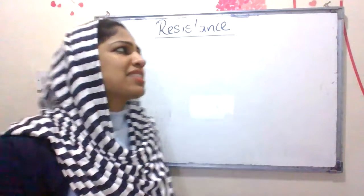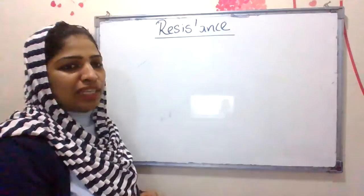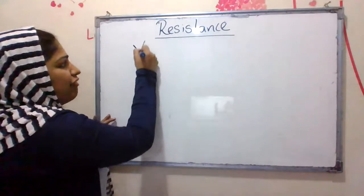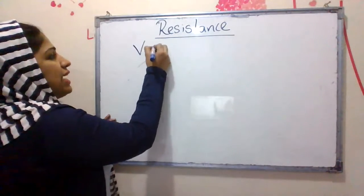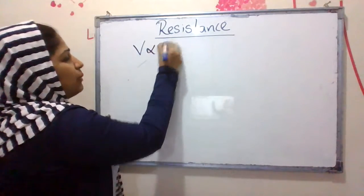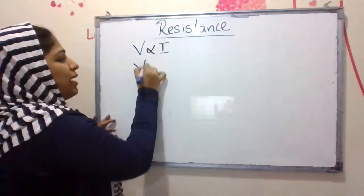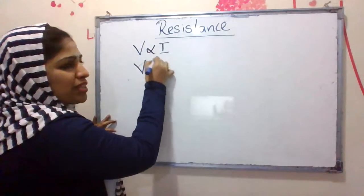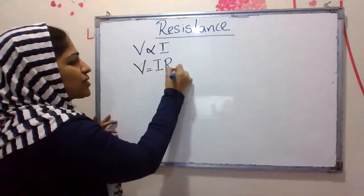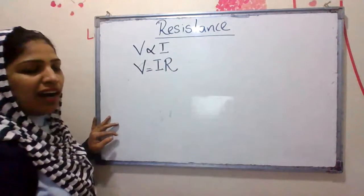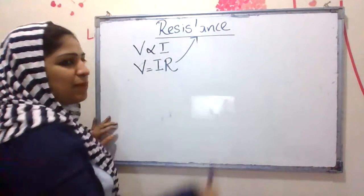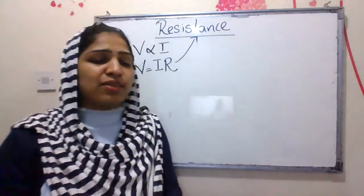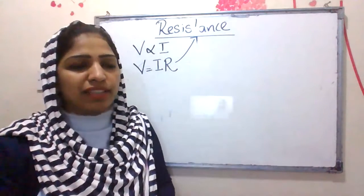In the statement, we have potential difference. The symbol is V, which is directly proportional to I. In proportionality, we have a constant of proportionality. The constant of proportionality is R, which is called resistance. In this video, we are going to focus on resistance.